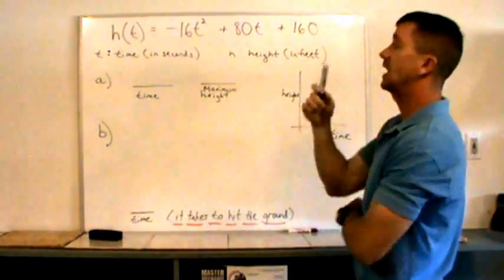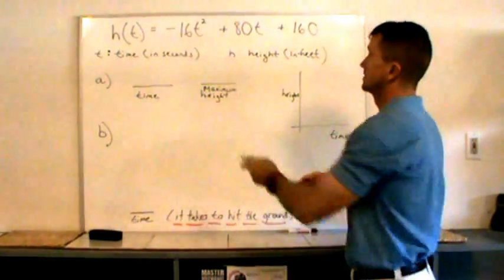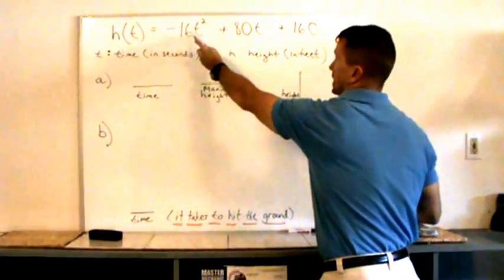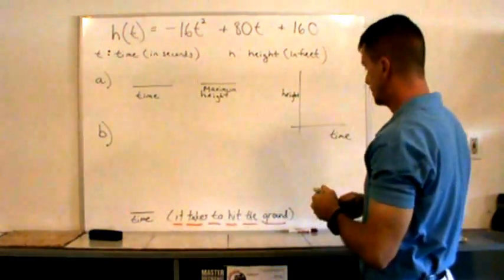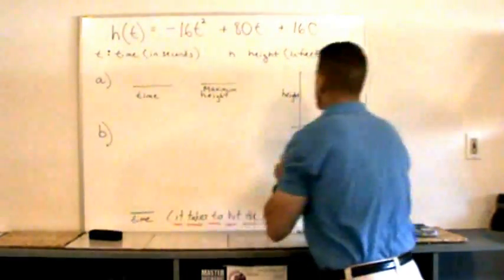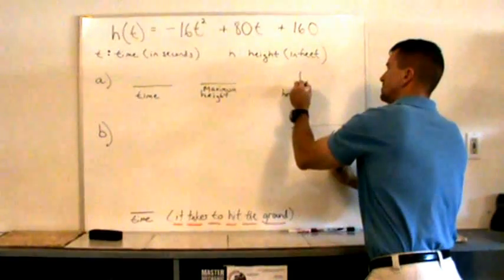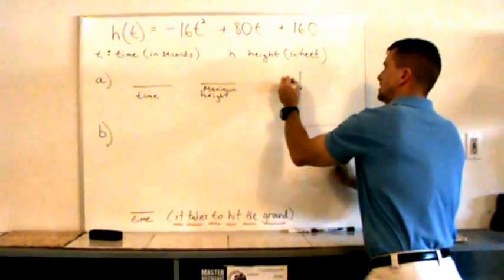Let's start out. Well, what's going on at time equal to zero? I substitute zero here. Negative 16 times zero squared plus 80 times zero plus 160 is 160. So what's going on is that at zero seconds, this ball's at 160 feet.